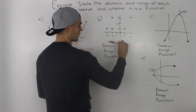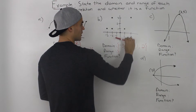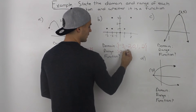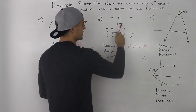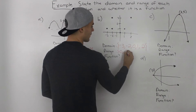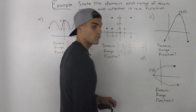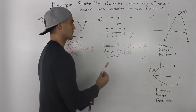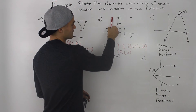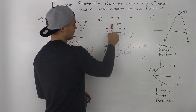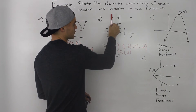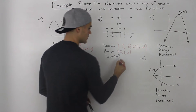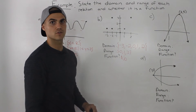For the range, looking at the y values from bottom to top: y value of 0 comes first, then 1 — which appears 3 times but we only write it once — there is no value of 2, and then a y value of 3. So the range is {0, 1, 3}. Is this a function? Running a vertical line through it — no, it's not. At an x value of negative 2, the relation is touching the vertical line twice, meaning multiple y values for that x value. So it doesn't pass the vertical line test.